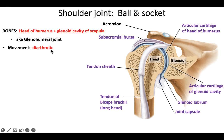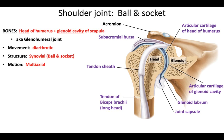The shoulder joint is diarthrotic — freely movable. The structure is synovial, ball and socket, and the motion is multi-axial. This joint has the greatest range of motion of all synovial joints. Comparing it to the other ball and socket joint, the hip: the shoulder has much more mobility, a larger range of motion, but because of that it loses stability. So when a joint is very mobile, it tends to have lower stability.